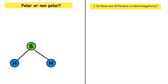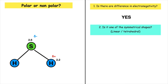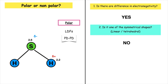Is this polar or non-polar? Is there a difference in electronegativity? Sulfur has 2.6 and hydrogen has 2.2, so there is a difference in electronegativity. Is it one of the symmetrical shapes — linear or tetrahedral? No, which means it is always going to be polar and therefore would have LDFs and permanent-dipole–permanent-dipole interactions.